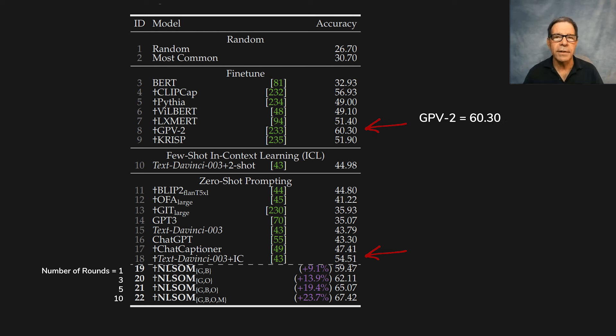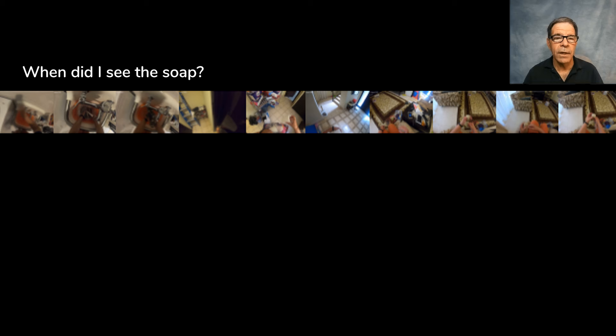Here are the results of this experiment compared to other leading models. The best performing zero-shot model was Text DaVinci 3, augmented with an image captioning module, which got an accuracy score of 54.51. The best performing fine-tuned model scored 60.3. The society of the mind keeps improving as the number of rounds of discussion increase from 1 to 3 to 5 to 10, reaching an accuracy score of 67.42 after 10 rounds — about 24% better than the top performing zero-shot model, Text DaVinci.